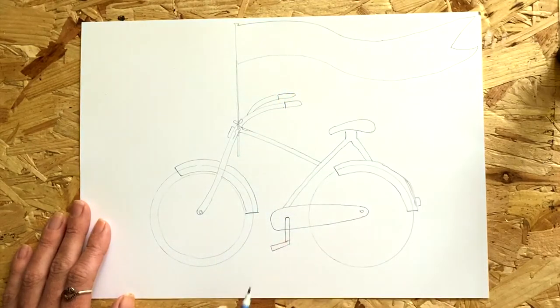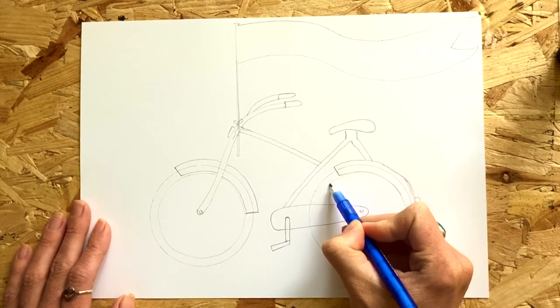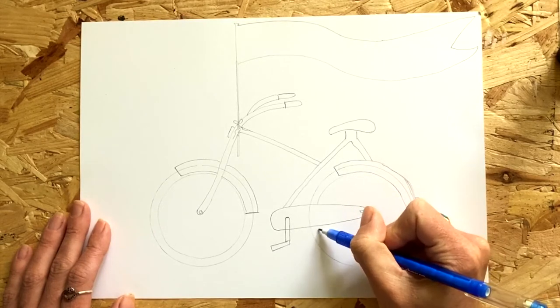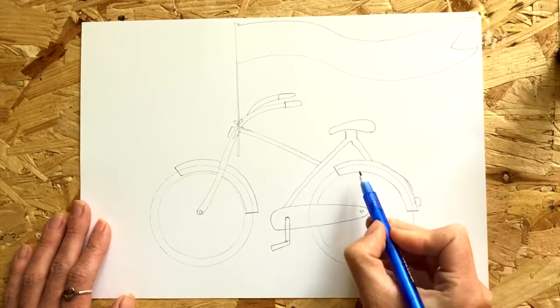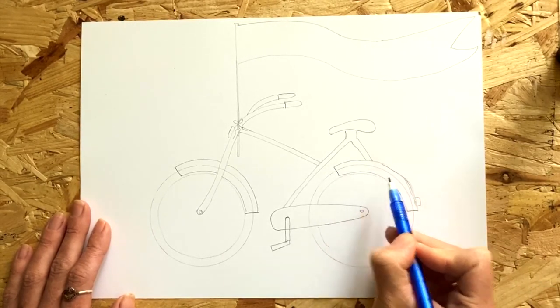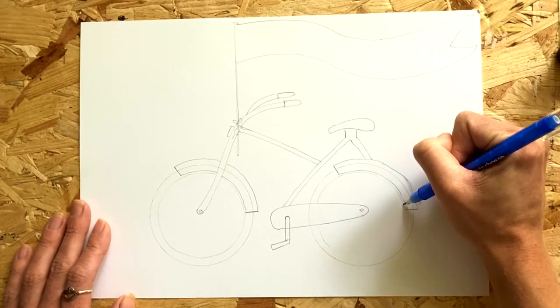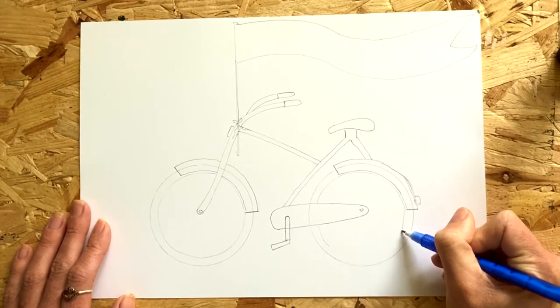You can see it looks a little bit like a tyre now. Repeat the same thing for the other wheel making sure to jump your pencil over the top of the part of the bicycle frame that goes towards the pedal.